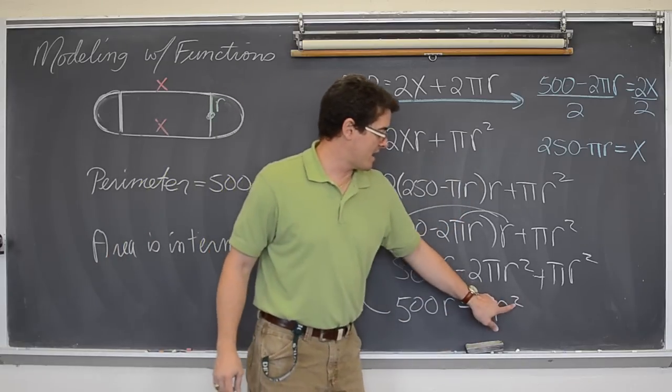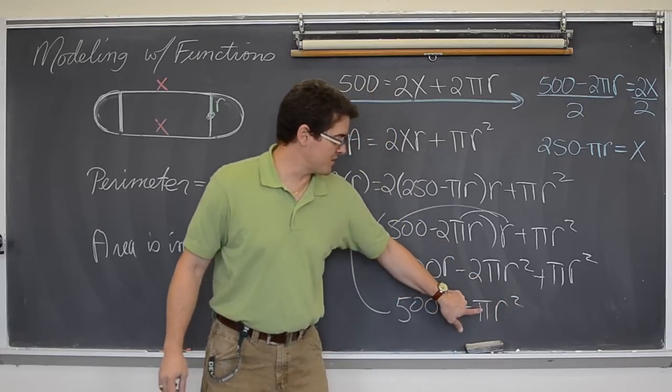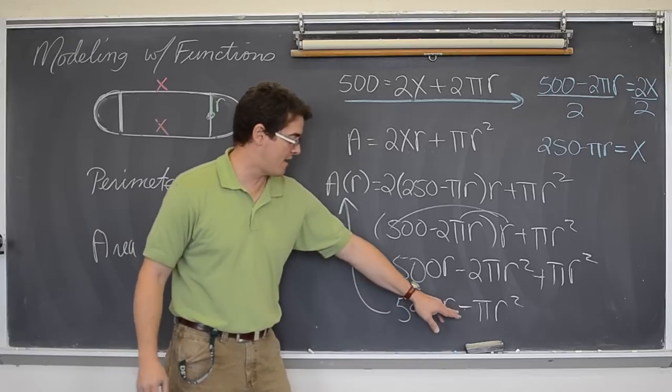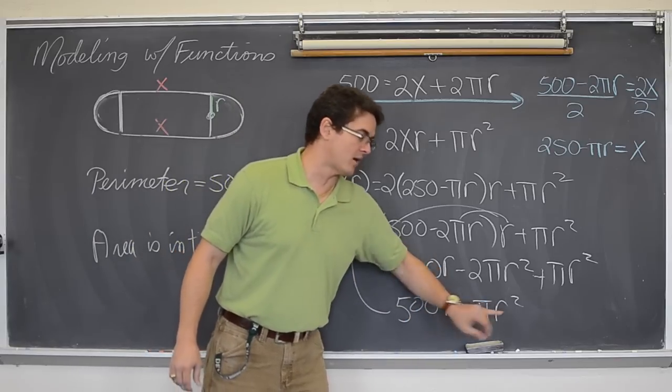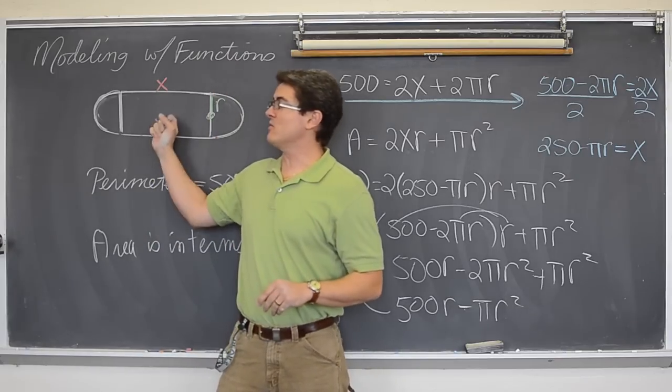Once again, we have a squared term. The leading coefficient is negative. So, if again, you wanted to maximize the area inside this track, you could graph that downward opening parabola and find the perfect radius to maximize the area inside of your track.